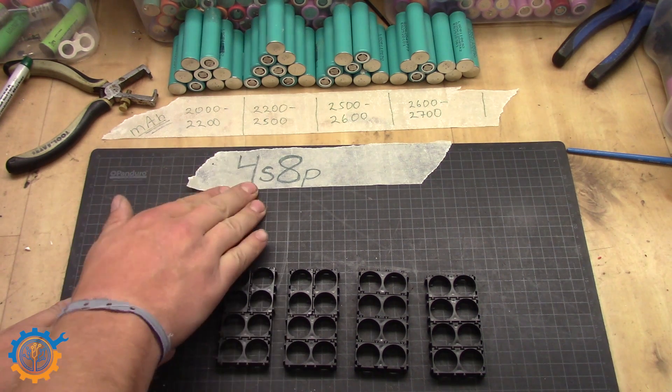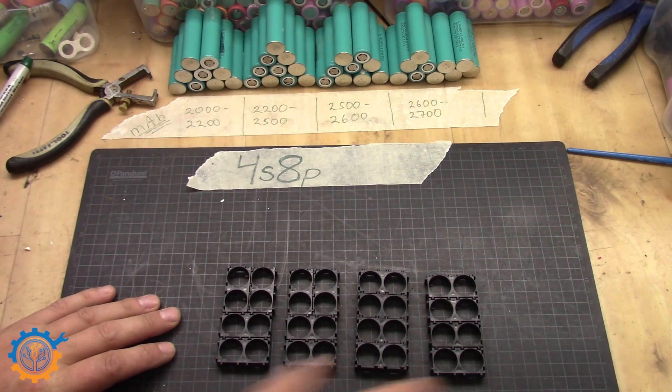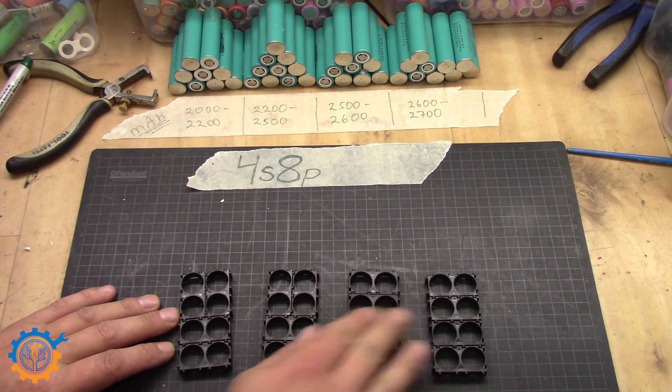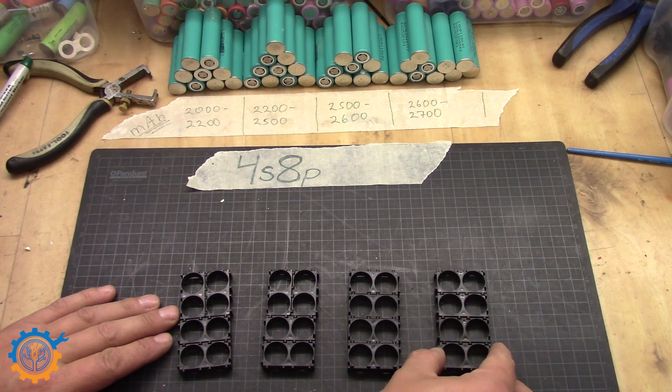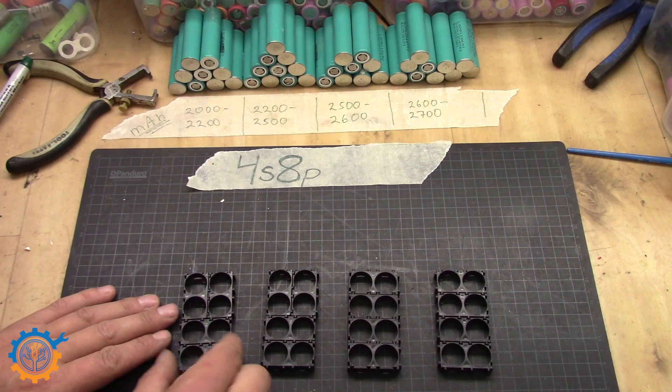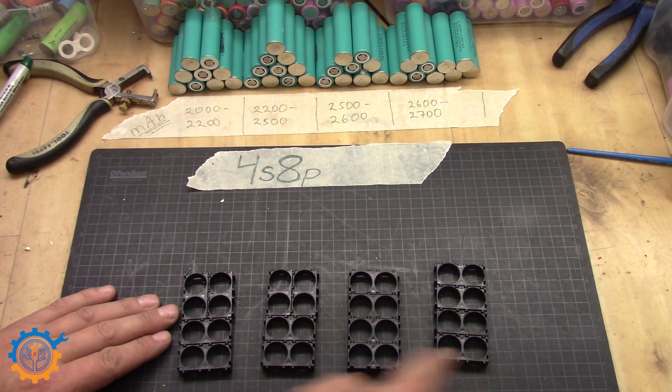We are going to build a 4S 8P pack and that stands for four of them with eight cells in each, and the eight cells are in parallel and those four are in series. So 8P in each with four in series.